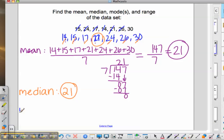Now, let's look at the mode. Mode means most often—the value that occurs the most often in a data set.